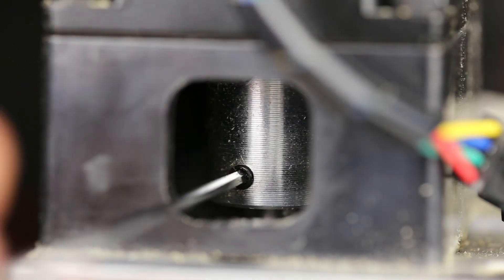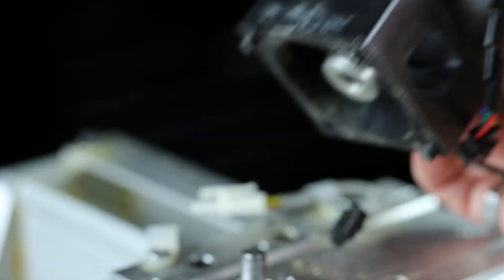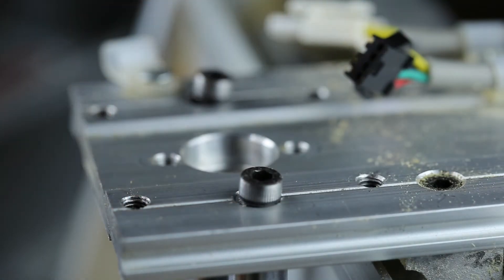The first step is to remove the Z carriage. Undo the coupler and remove the stepper motor. Then unscrew the four screws holding the Z-linear rods in place and remove the carriage.